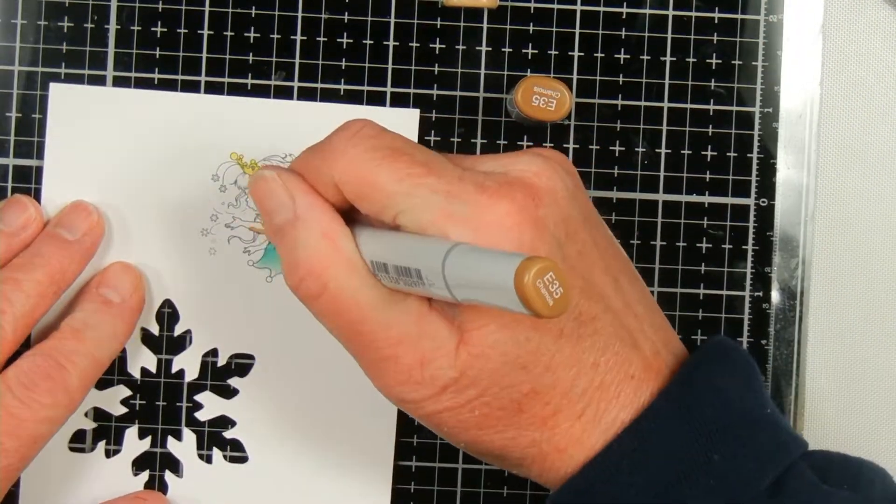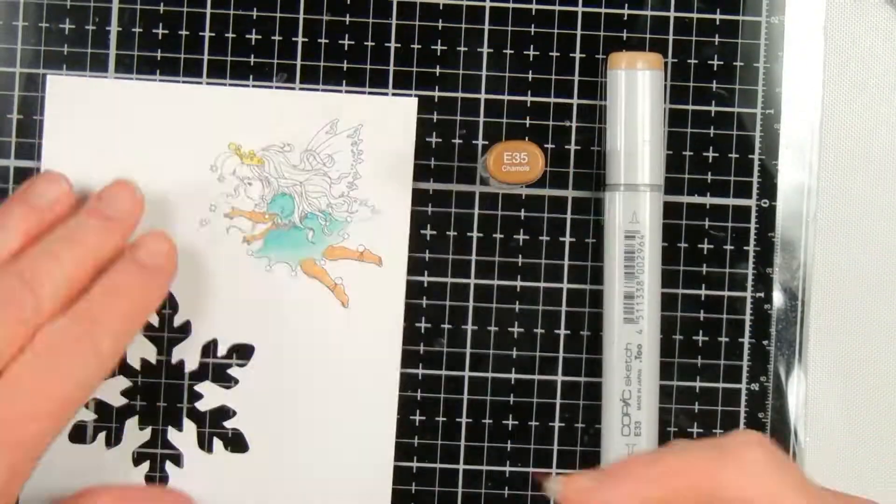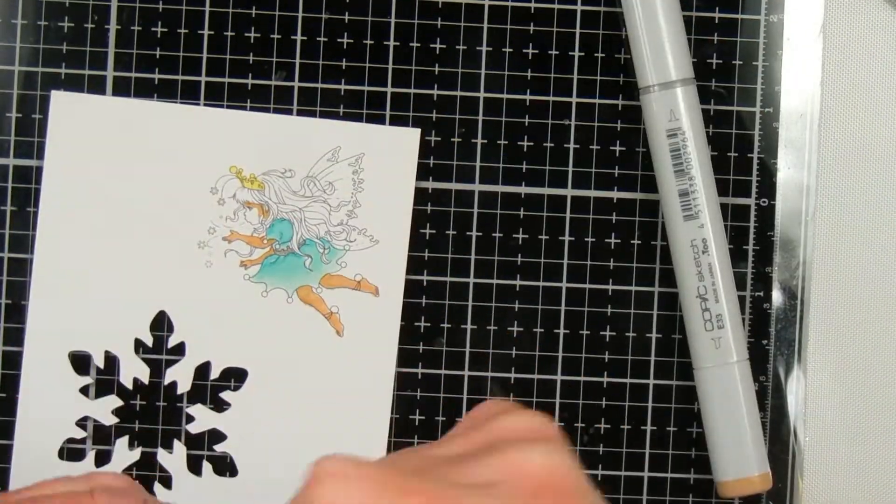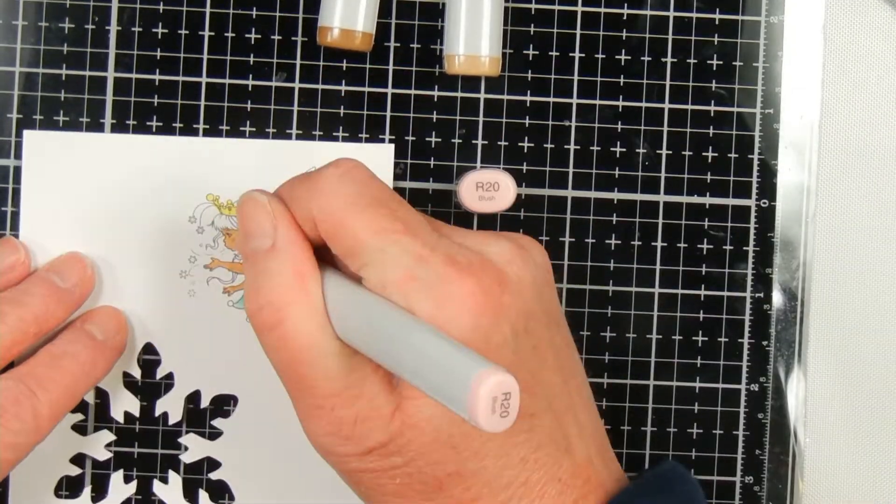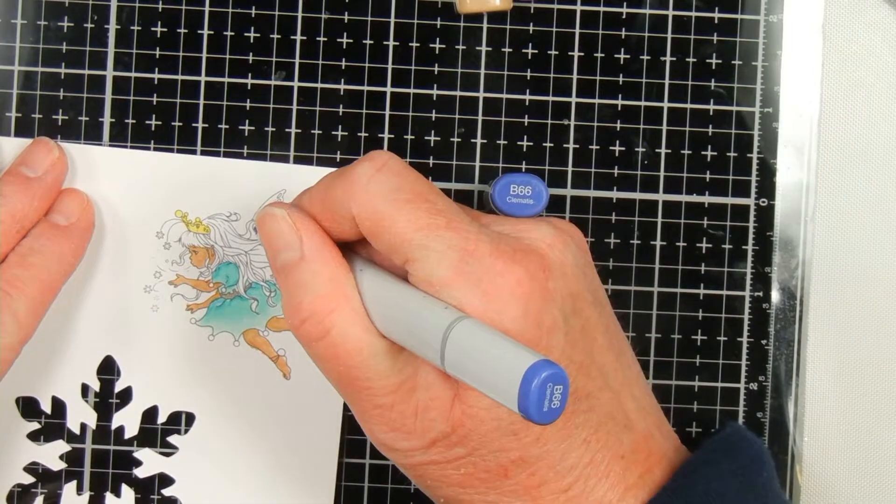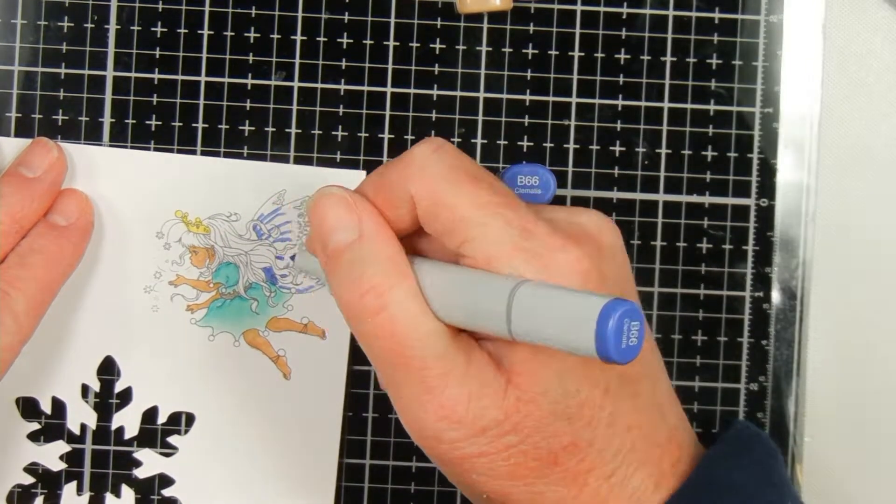I chose the colors based on the ones that had either the Copic original with a fine nib or my Copic sketch where I replaced the broad tip with a fine nib. Since this is a small image, I wanted to have the smaller point.